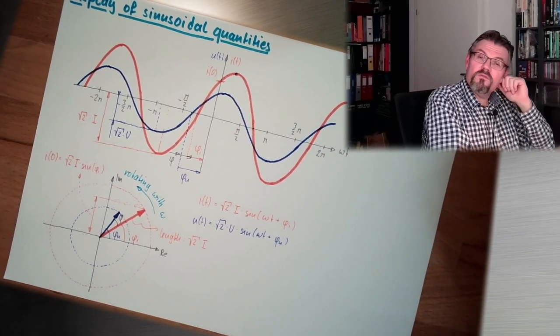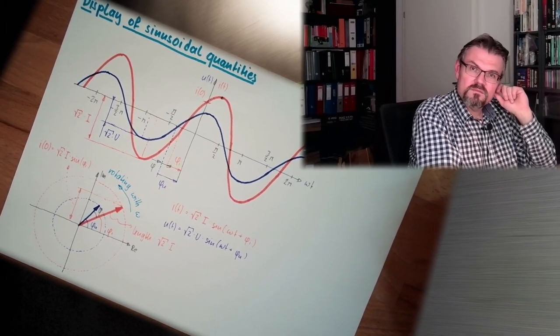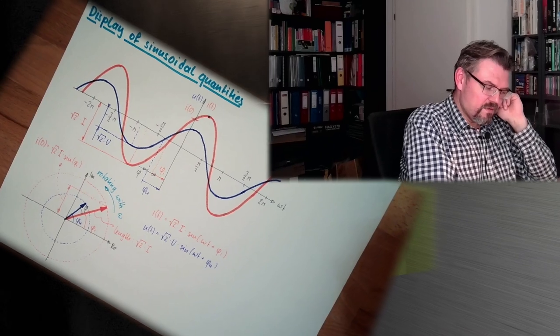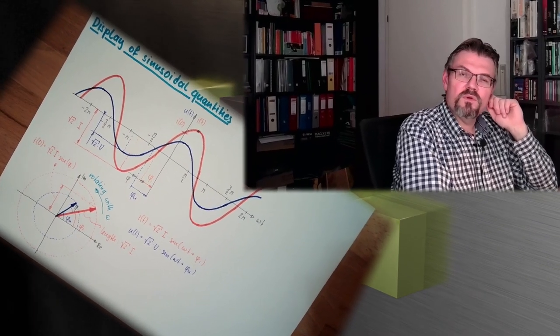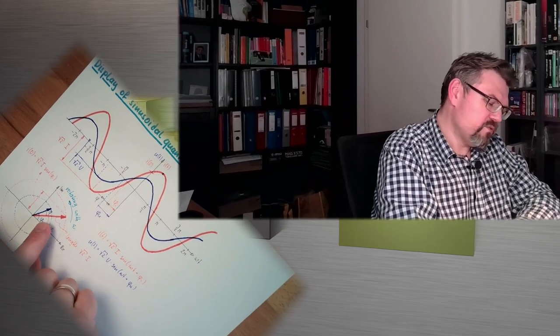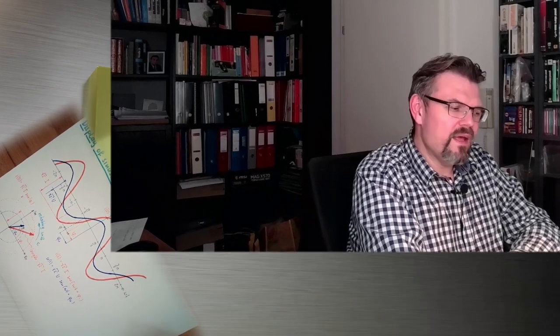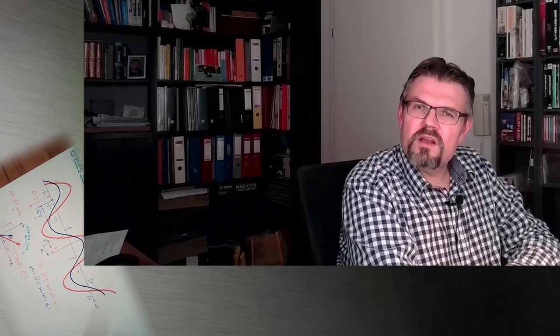But somehow we have to learn to deal with these numbers, these complex numbers. So this is what I am going to explain in the next video. Next video we are talking about what is a complex number. Right now we just draw arrows. But next video we will draw, we will say, okay, what is a complex number? And there is a real part and an imaginary part and stuff. And what are the rules to calculate with imaginary numbers, or with complex numbers. Next video. For this time, thank you very much for listening. Goodbye.